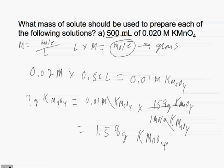In order to prepare this solution, take a 500 milliliter volumetric flask, add 1.58 grams of KMnO₄ into the flask, and then add water up to the 500 milliliter mark on the volumetric flask.